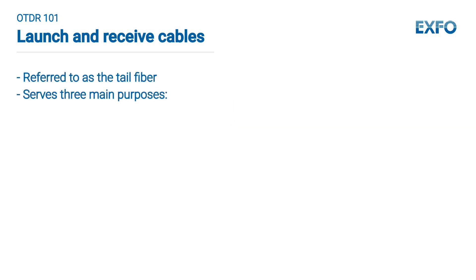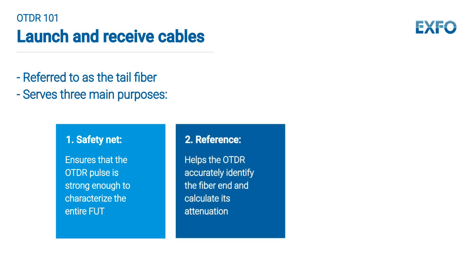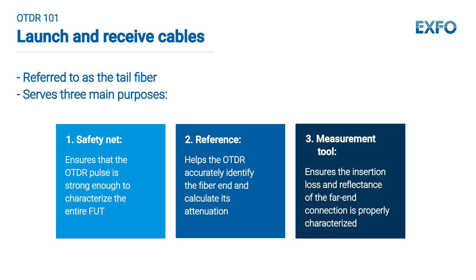The receive cable, sometimes called the tail fiber, serves three main purposes. First, it acts as a safety net — seeing the receive cable on the OTDR trace ensures the OTDR pulse is strong enough to characterize the entire FUT. Second, it serves as a reference: by adding a known element at the end of the fiber under test, the OTDR can accurately identify the fiber end and calculate its attenuation. Finally, it serves as a measurement tool — by mating the last connector of the network to a fiber, the insertion loss and reflectance of the far-end connection can be properly characterized.